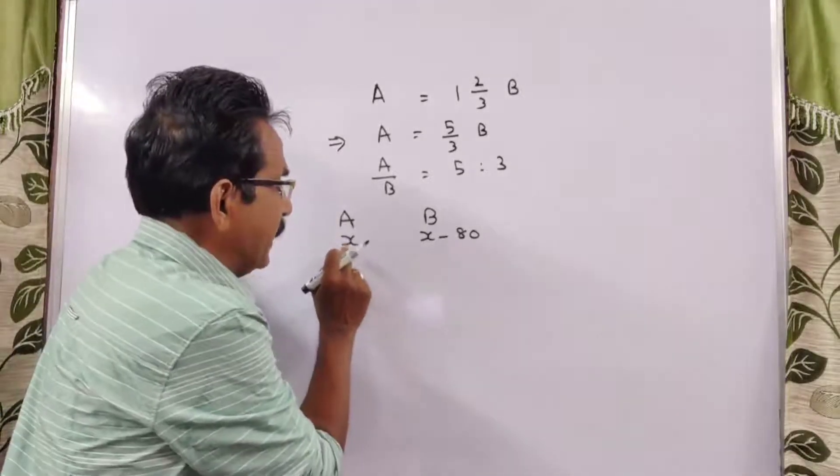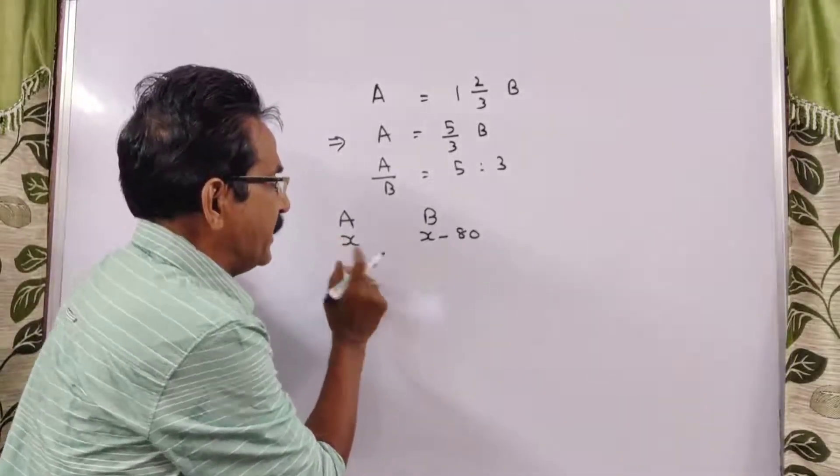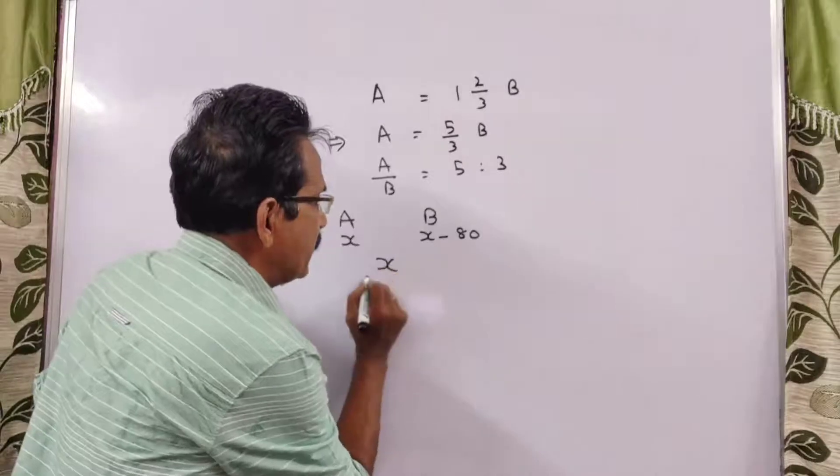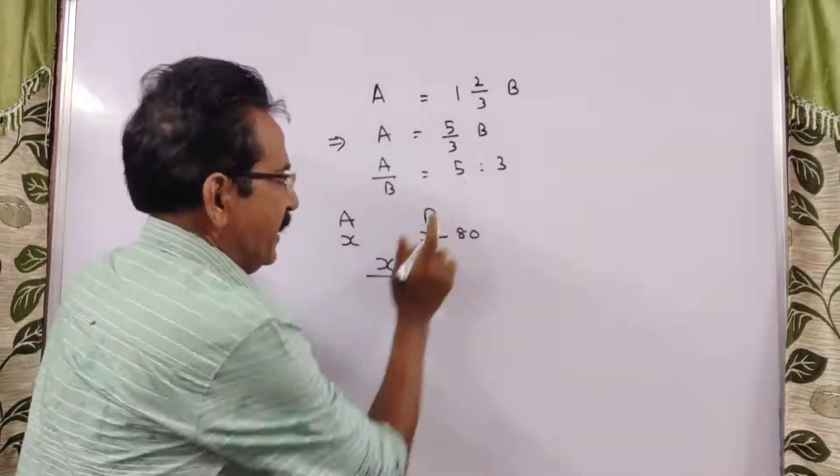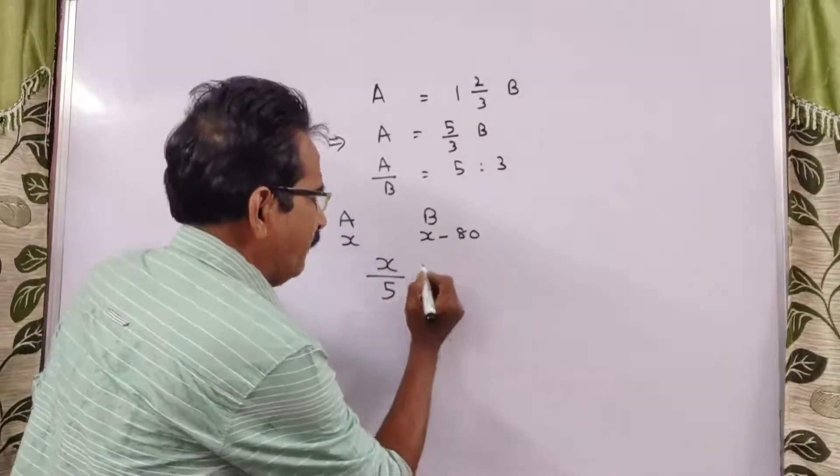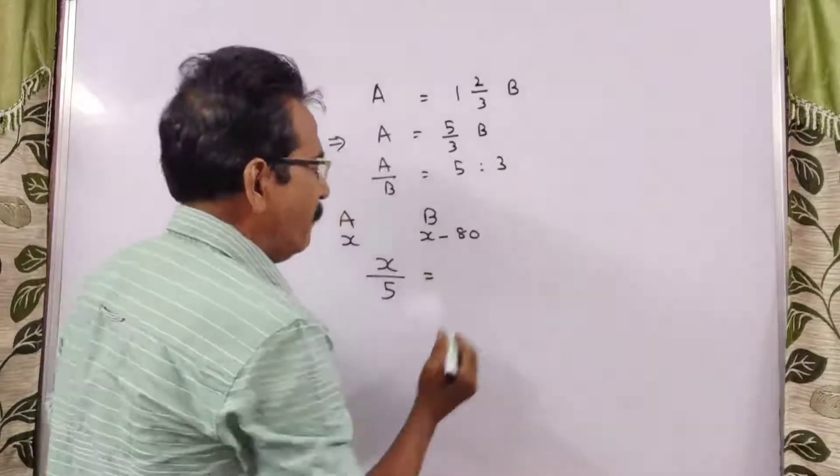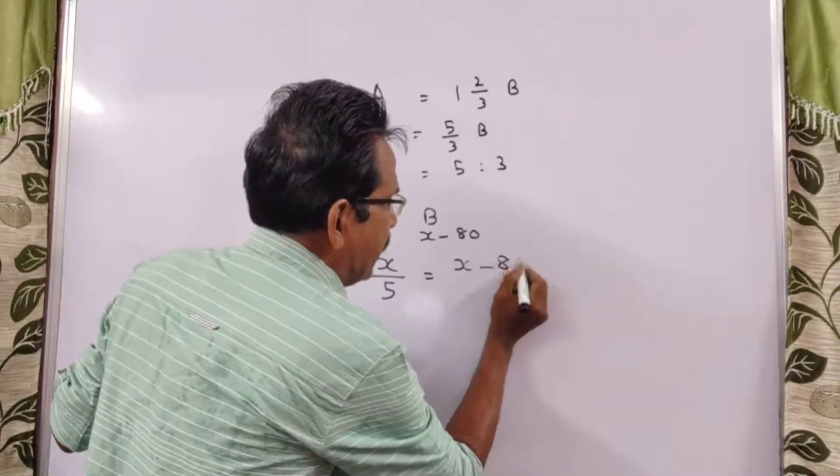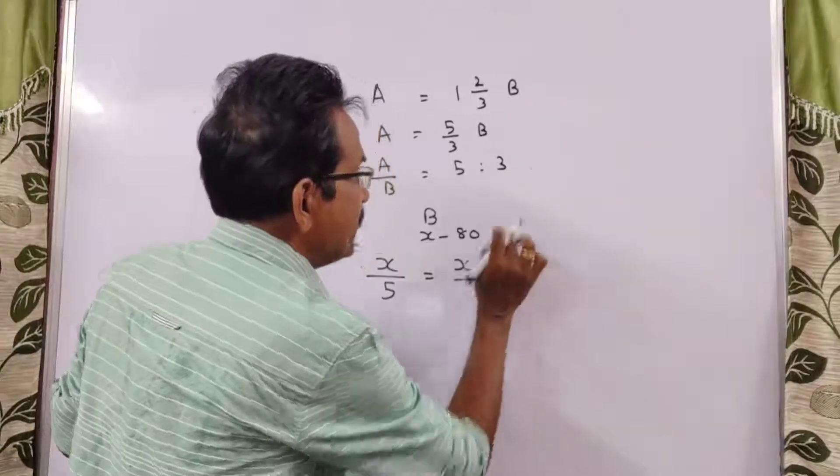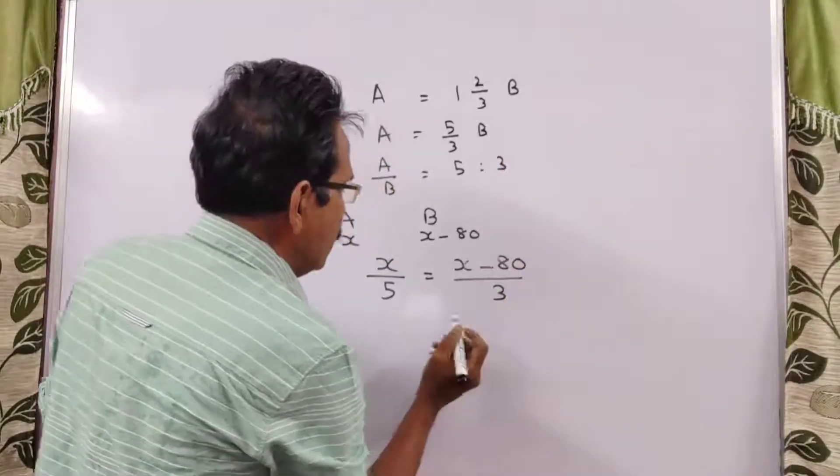Time taken by A to run x meters is equal to distance by velocity, x over 5. You can take anything, no problem. Is equal to time taken by B, distance by velocity.